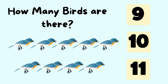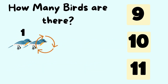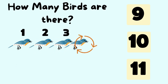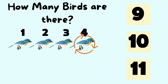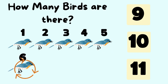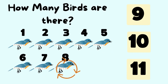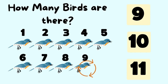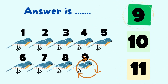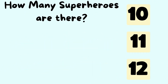How many birds are there? Let's count the number of birds. It is one, two, three, four, five, six, seven, eight, nine birds. So the answer is nine birds.